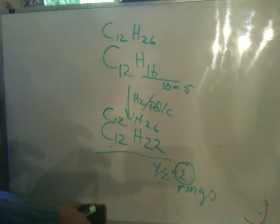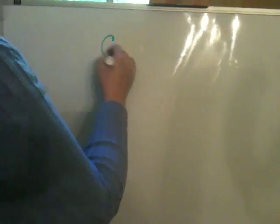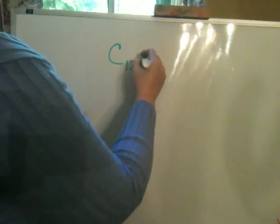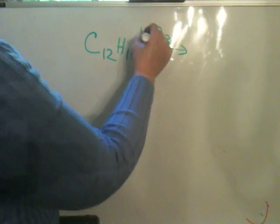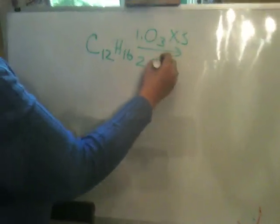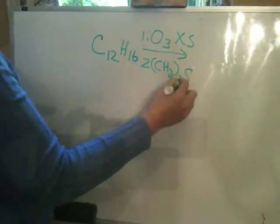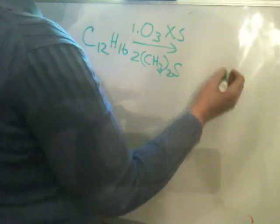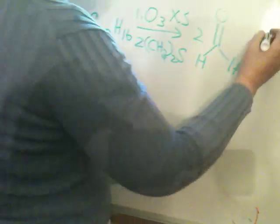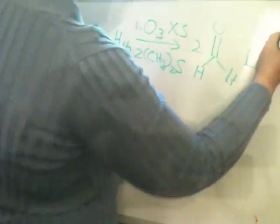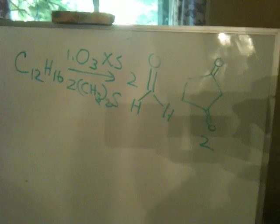Then what I told you at the end of the problem was that this compound upon ozonolysis, so when you take C12H16 and submit it to ozonolysis excess O3 to dimethyl sulfide excess, you will obtain the following molecules: you will get two equivalents of this molecule and you will get two equivalents of this molecule.